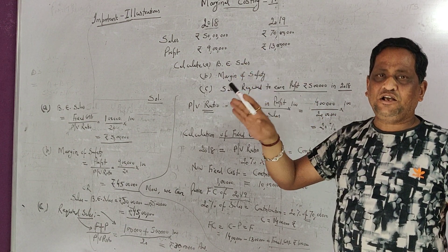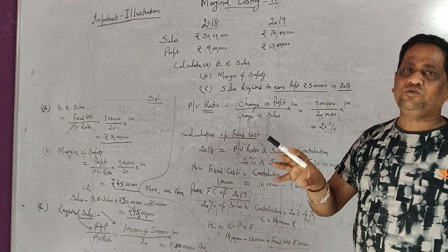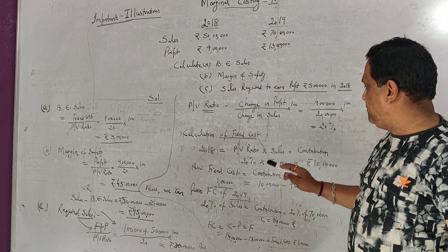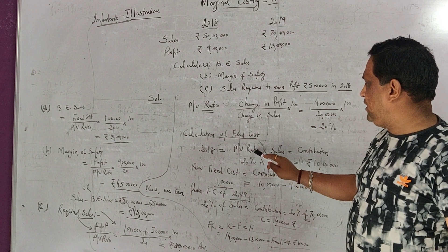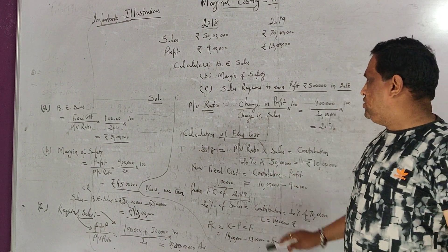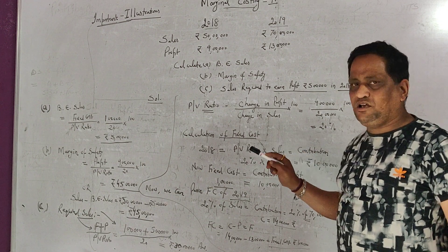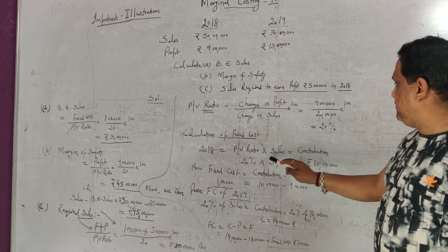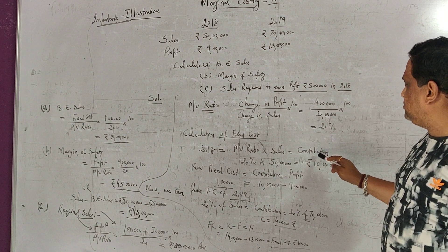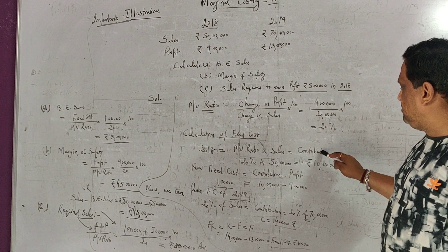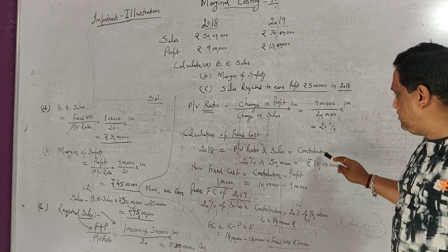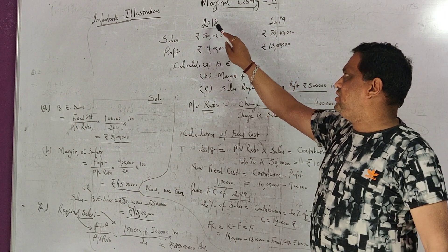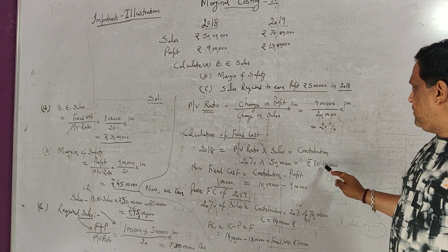If I want to reach contribution directly, I multiply PV ratio by sales. For 2018, I take the sale of 50 lakh and multiply by PV ratio of 20%. So 20% of 50 lakh gives contribution of rupees 10 lakh. Now I need to calculate fixed cost for 2018.